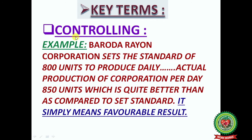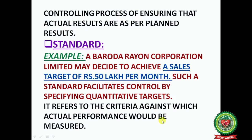Key term — Controlling. Example: Baroda Rayon Corporation sets the standard of 800 units to produce jelly. The actual production per day is 850 units. When compared — standard 800, actual 850 — that means 50 units are overproduced, which is better than the set standard. It simply means a favorable result. Controlling is the process of ensuring that the actual results are as per the planned result.